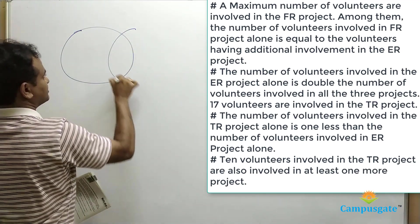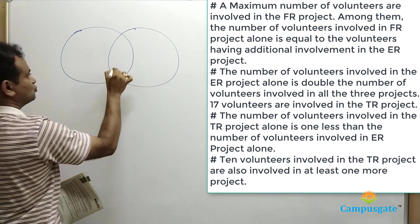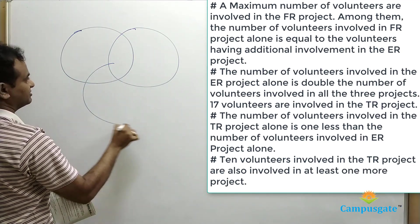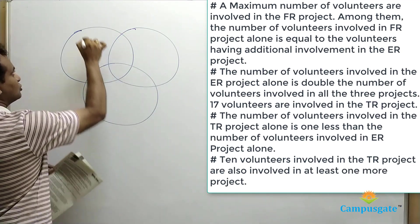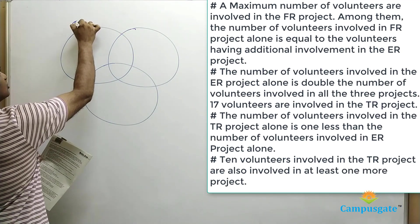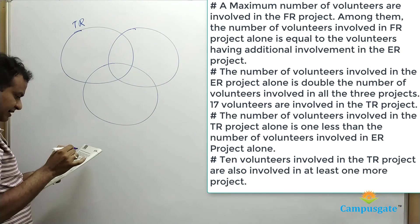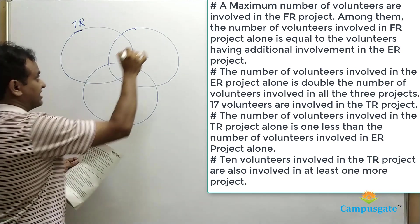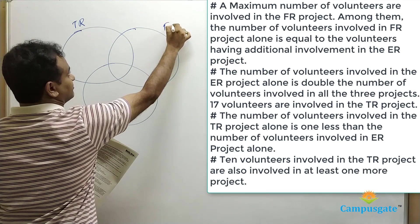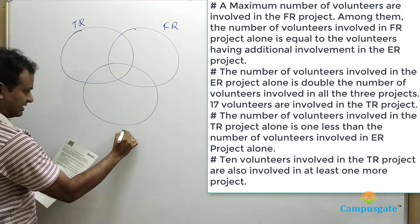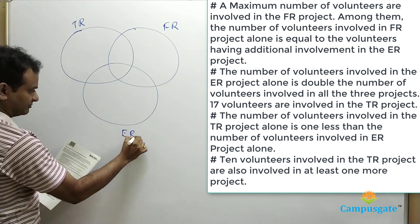So we draw three circles: circle 1 is Tsunami Relief, circle 2 is Flood Relief, and circle 3 is Earthquake Relief. There are 3 different projects.